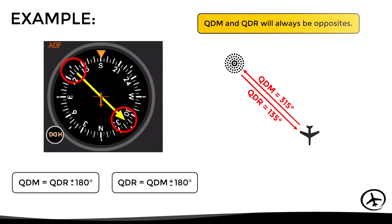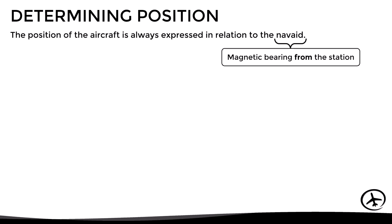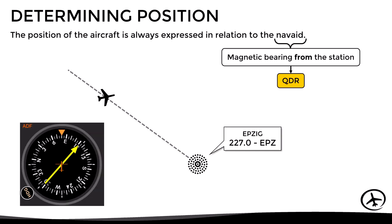In this order of ideas, the position of the aircraft is always expressed in relation to the NDB, which means that we have to use the magnetic bearing from the station, or in other words, the QDR. Here for example, according to this ADF, we can see that the QDM is 122 and the QDR is 302. With this in mind, we would say that the position of this aircraft is the QDR 302 from the EPSIG NDB.